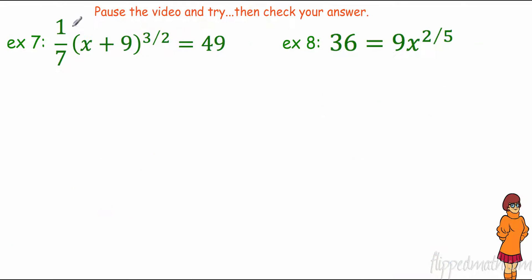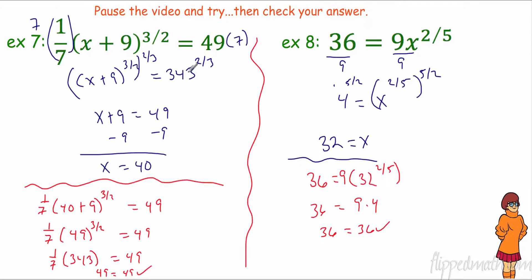Alright, so far so good. Pause the video — you try these and check your answers. Over there, the opposite of multiplying by one-seventh is multiplying by 7, giving 343 equals x plus 9 to the three-halves. Raising each side to the two-thirds gave x plus 9 equals 49; subtract 9 to get 40, and it checked out. Over here, divide by 9 on both sides, then raise to the five-halves power, and we got 32. That checked out too. Mr. Bean, you're in the clear.